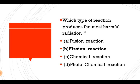Which type of reaction produces the most harmful radiation? It is not a fusion reaction, and not a chemical or photochemical reaction. The nuclear reaction produces the most harmful radiation. The hydrogen bomb involves a fusion reaction, developed by Edward Teller.